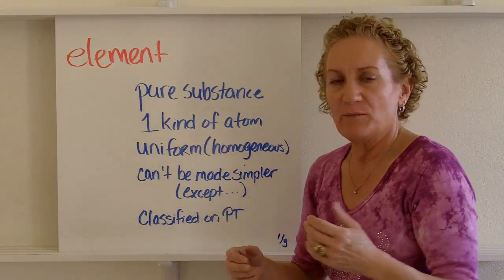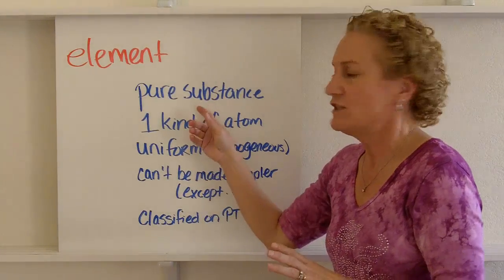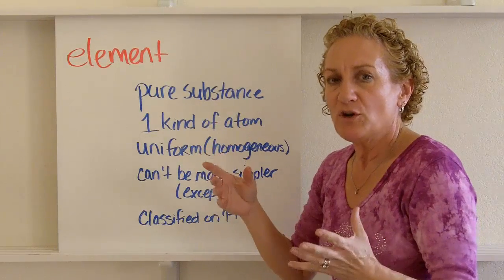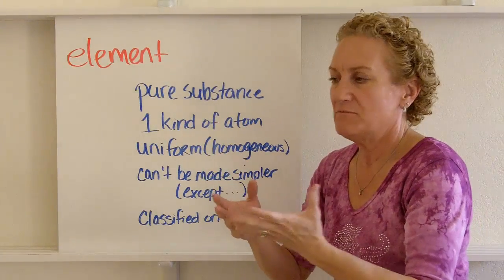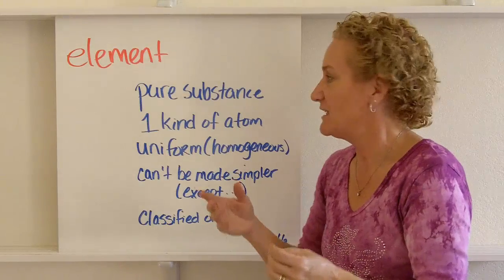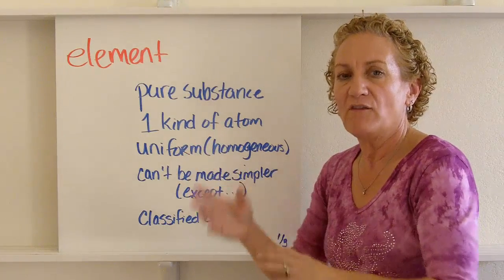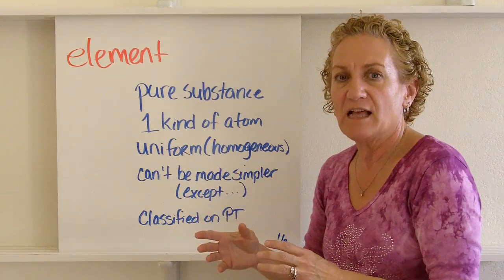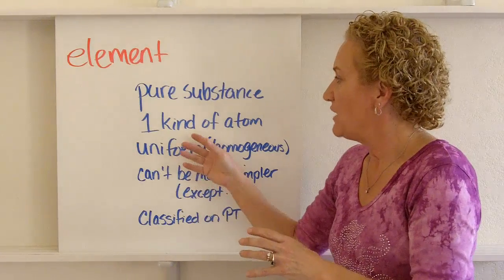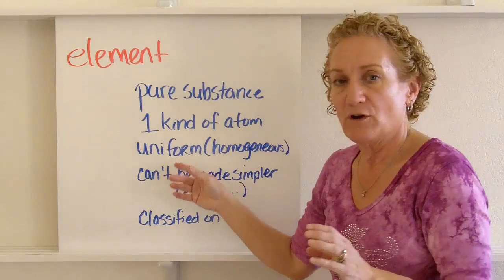So we're going to start with elements. There are several characteristics of elements. The first thing is it's a pure substance — it's just what it says it is. There's only one kind of atom, and it's uniform.